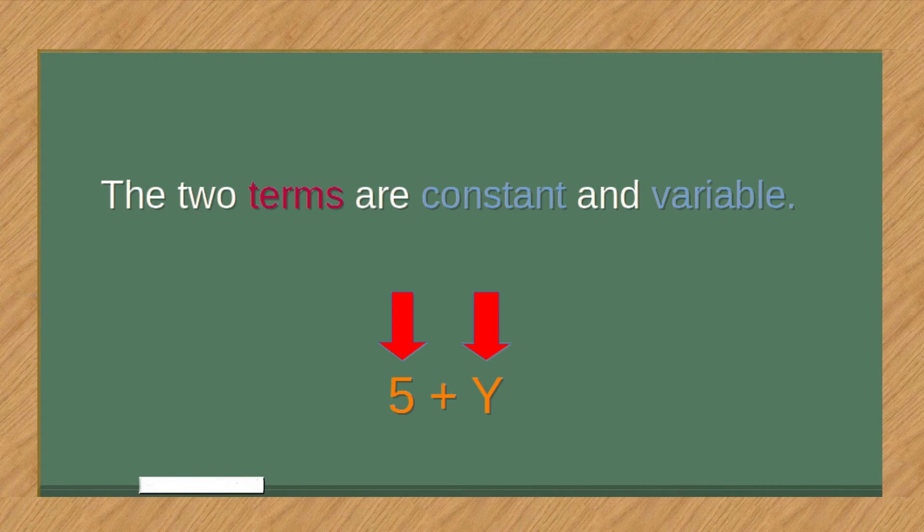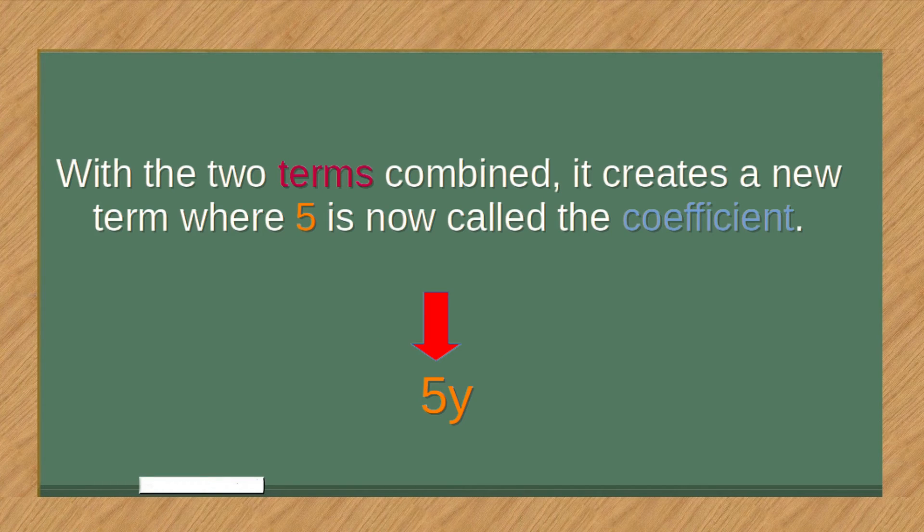The two terms are constant and variable. With the two terms combined, it creates a new term, where 5 is now called the coefficient.